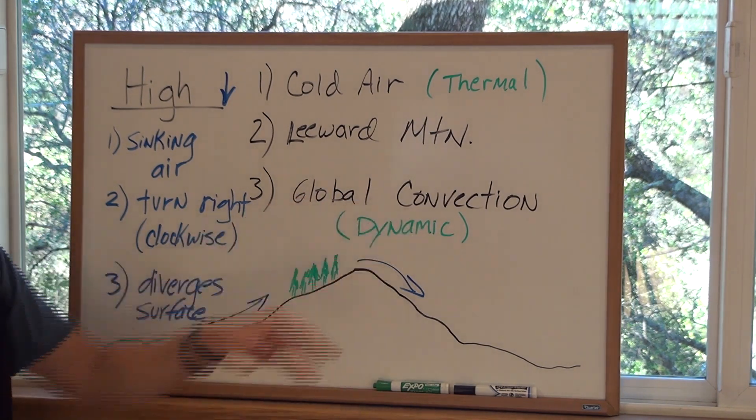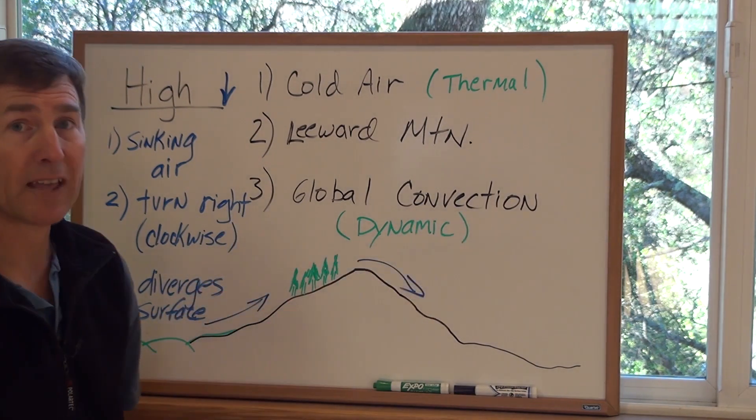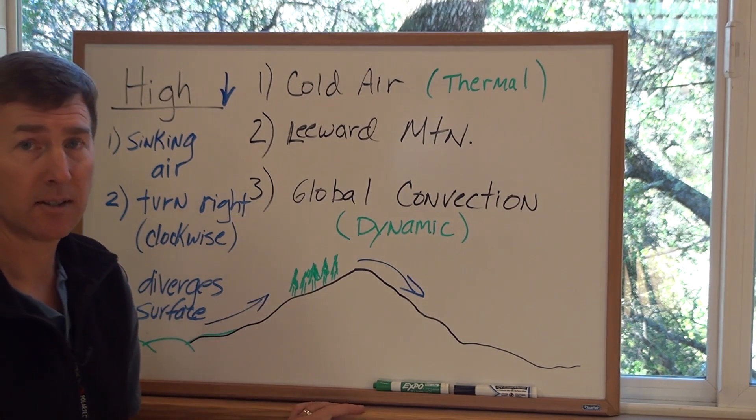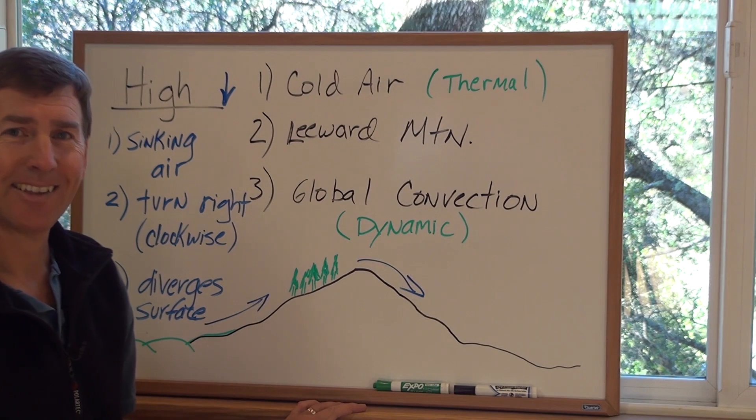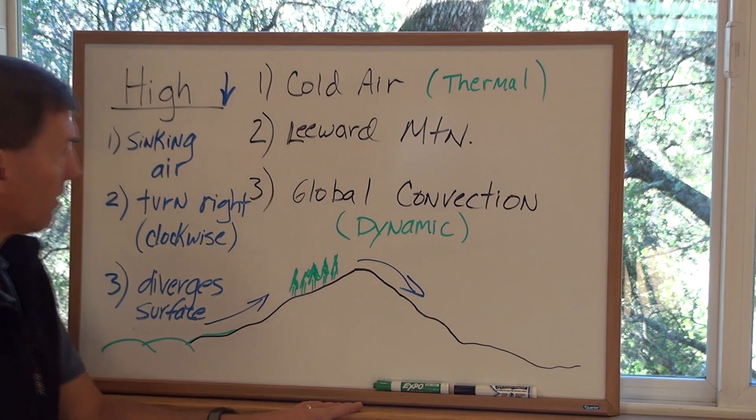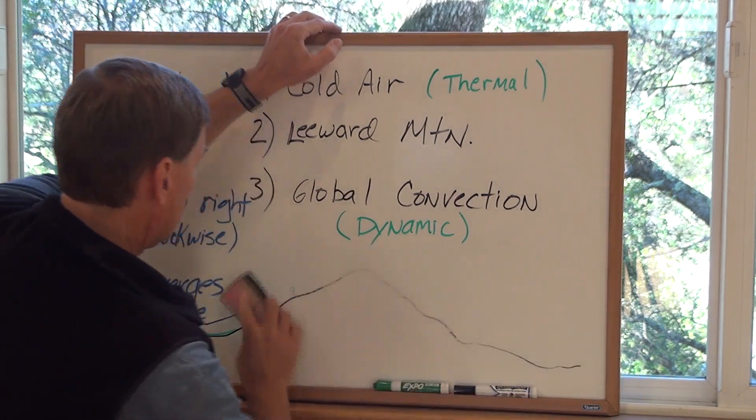And then our third and final way that air can sink is what I call global convection. These are known as Hadley cells and this is a dynamic process. It is not driven by heat or lack of heat in this case, the cold areas.